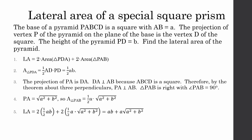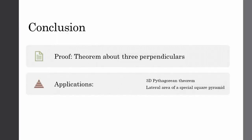Lastly, we substitute the area of triangle PDA and the area of triangle PAB to solve for the lateral area. This simplifies to AB plus A times the square root of A squared plus B squared. The lateral area of a square pyramid with the vertex above one of the square's vertices is AB plus A times the square root of A squared plus B squared. In conclusion, I proved the theorem about three perpendiculars and used it to solve non-standard problems like the 3D Pythagorean theorem and finding the lateral area of a special square pyramid. Thank you for listening to my presentation.